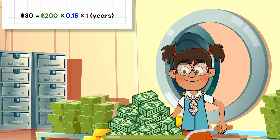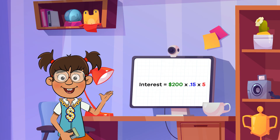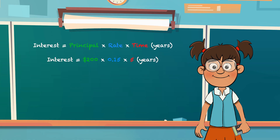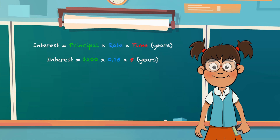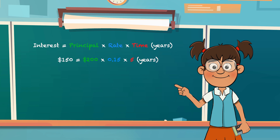$30 is pretty impressive! If Frankie leaves $200 in her account for the entire year, she will earn $30 in interest, for a total of $230. Using this same equation, how much money will she earn in interest in five years? After five years, Frankie will earn $150 in interest, for a total of $350 in savings.